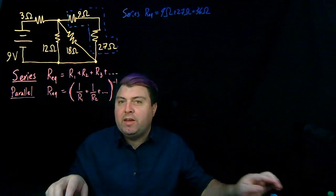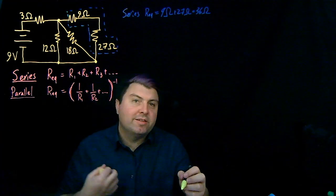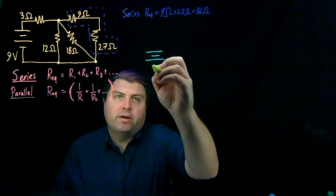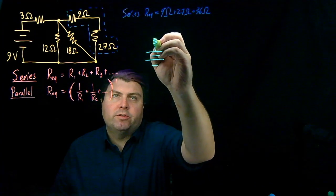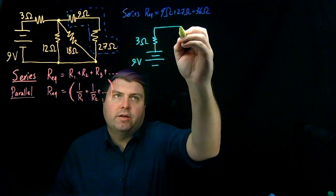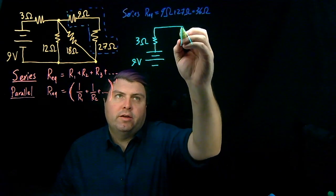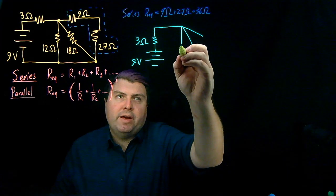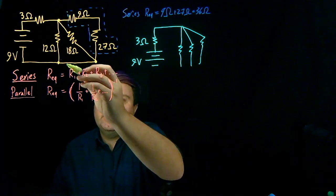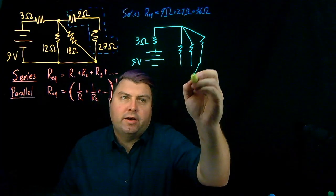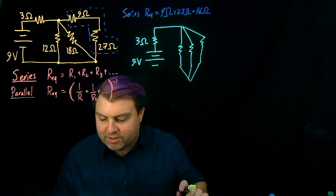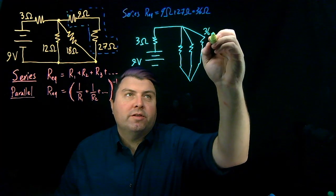And then it might be nicer to draw these three as kind of what we expect parallels to look like. So we can draw our battery like this, we can draw our 3 ohm like this, and then we can just draw three separate paths. Since there's nothing in here, we don't really care how the three converge. We're going to have some very ugly resistor drawings.